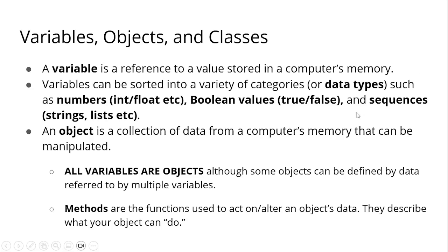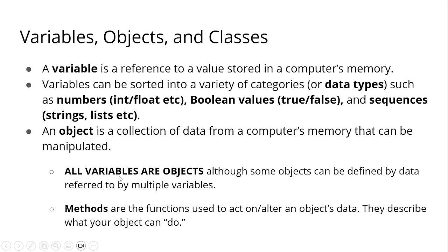And sequences for string, list, and etc. An object is a collection of data from a computer's memory that can be manipulated — these are the data that can be manipulated. All variables are objects, although some objects can be defined by data referred to by multiple variables.